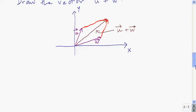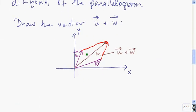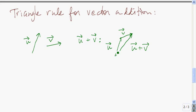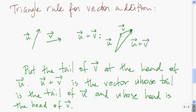We can also see this in the parallelogram. Here we have vector u, and this here was vector w. We can see that the diagonal of the parallelogram, viewed in terms of the triangle, is the third side of the triangle. To recap: we take vector u, put the tail of v at the head of u, and then the vector u plus v has its tail at the tail of u and its head at the head of v. Here I've written the rule for you.